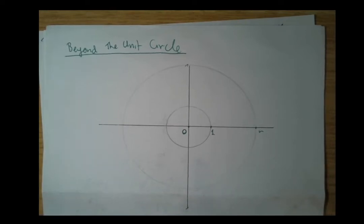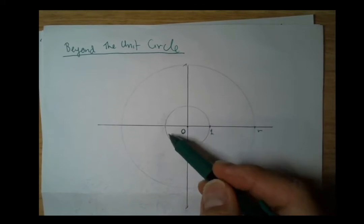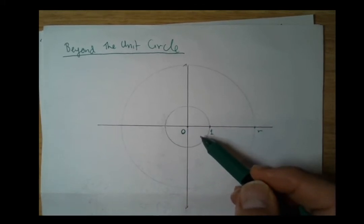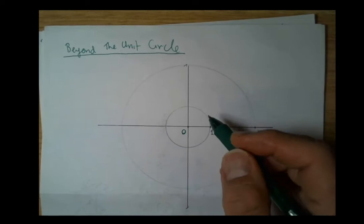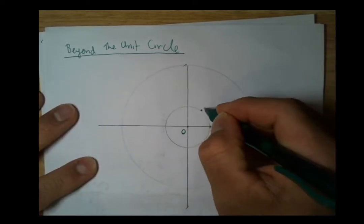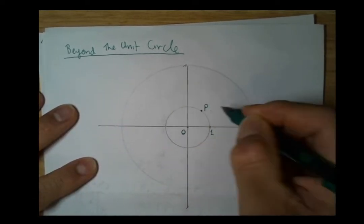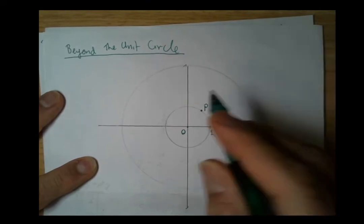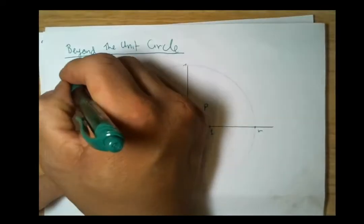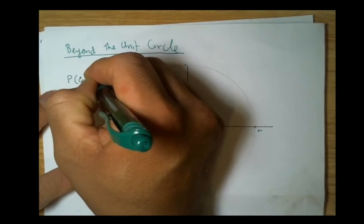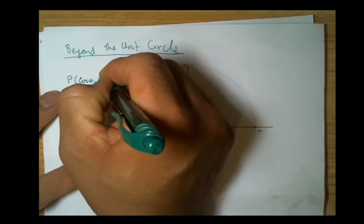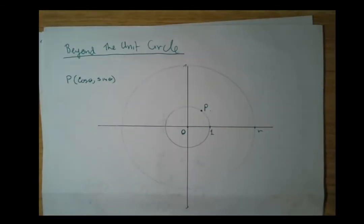Now we want to move beyond that and look at points that don't necessarily lie on the unit circle. Can we still use the cosine and sine, and how would that work? Previously, here was our definition that we had some point P.